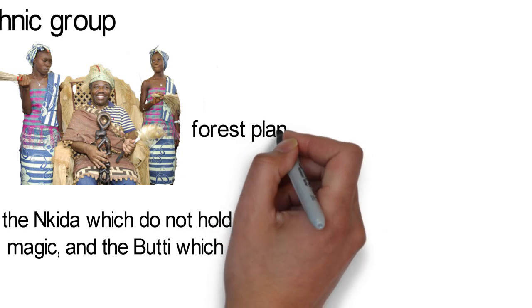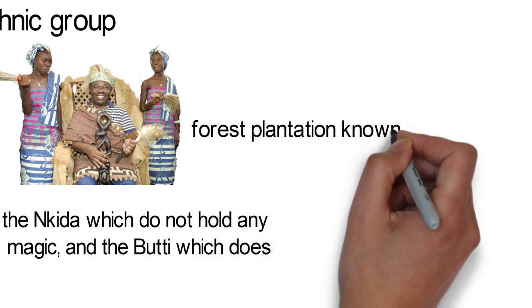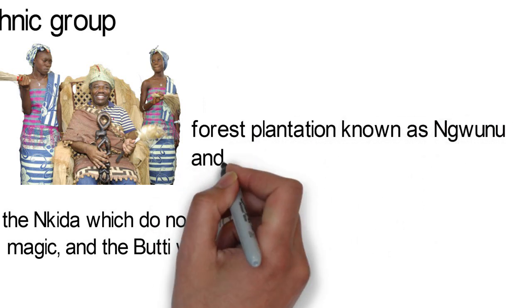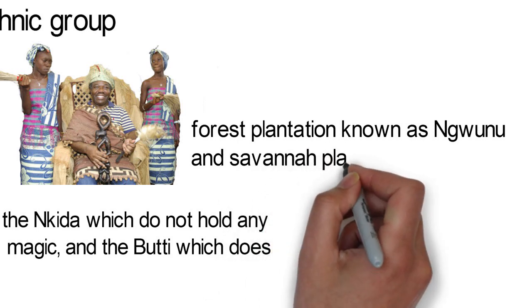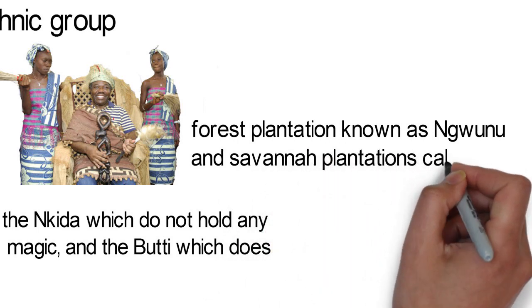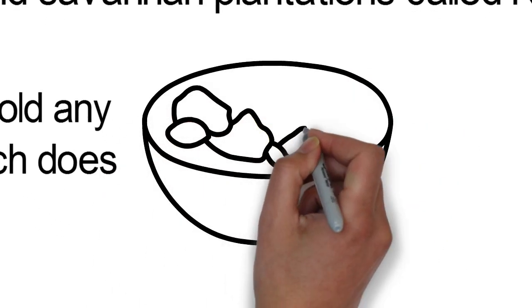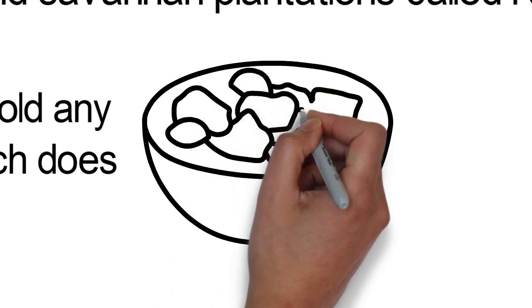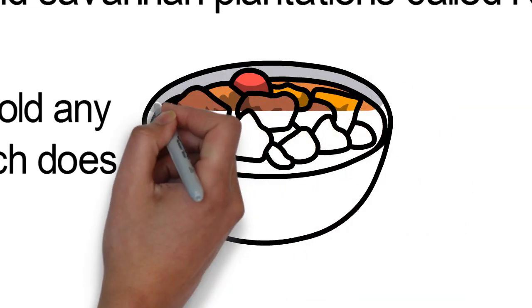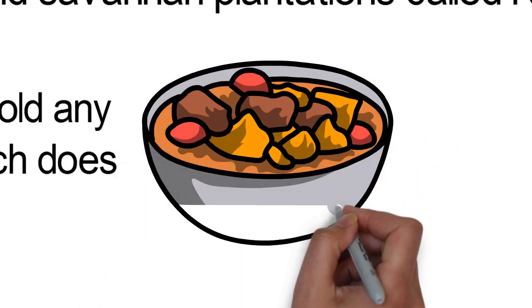These people are primarily farmers. They practice two types of large-scale cultivation: forest plantation known as Ngunu, and savannah plantations called Ntieni. They also keep small gardens behind their houses in the village. Forest plantations are the major sources of cultivated foods for the Teke.